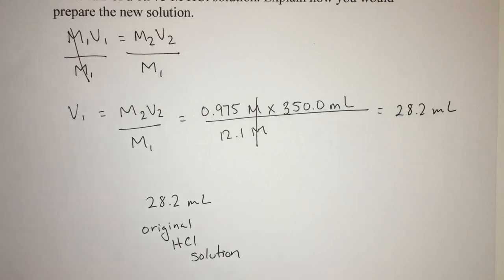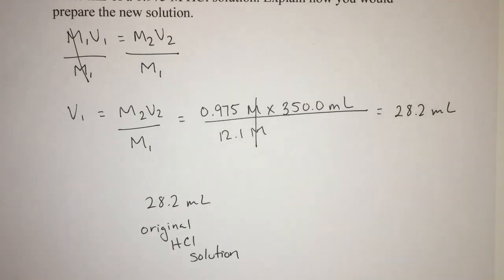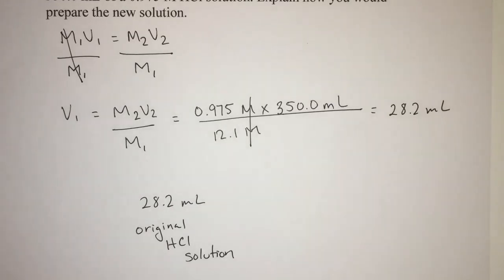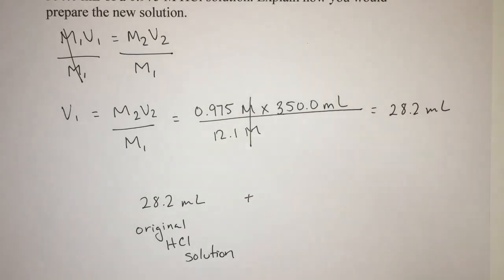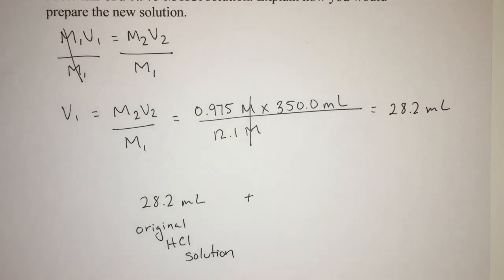And we're going to add some water, or actually we're going to add this to some water to make a new solution. And then we're going to keep adding water until we get to a final volume of 350 milliliters. Remember, we're not going to add 350 milliliters of water. We're going to add water to get to the final volume, because that's our V2.